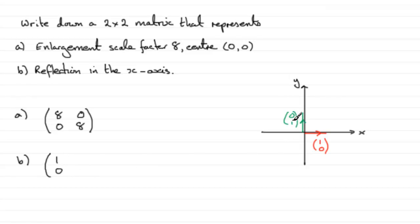And then what happens to (0,1) when you reflect it in the x-axis? Well, it goes down here, it goes to (0,-1). So that's that one there, (0,-1). Alright?